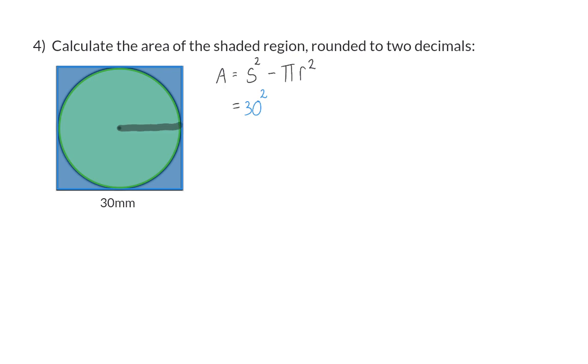For this, you need to realize that the diameter of the circle is the same length as the sides of our square, which means the radius would be half of that, and that is 15 millimeters.